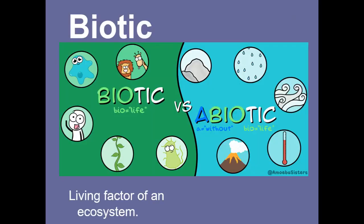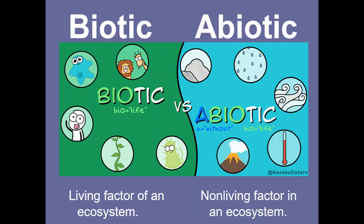What if we put the biotic and the abiotic factors in there? Biotic means those are the living things of an ecosystem — bio means life, and the ending means pertaining to life. Abiotic — 'a' means without — so without living, without life. Things like rocks, mountains, any kind of water, weather, temperature, volcanoes can be considered abiotic. So abiotic means anything that is non-living.